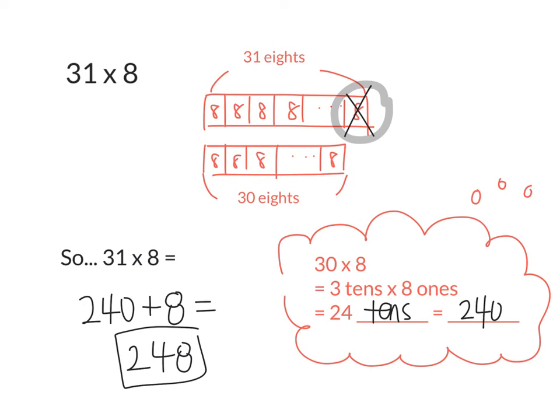I want you to make sure you draw in your notebook this example. Over here, you have 31 eights. And down here, you have 30 eights, which is one 8 shorter than 31 eights.